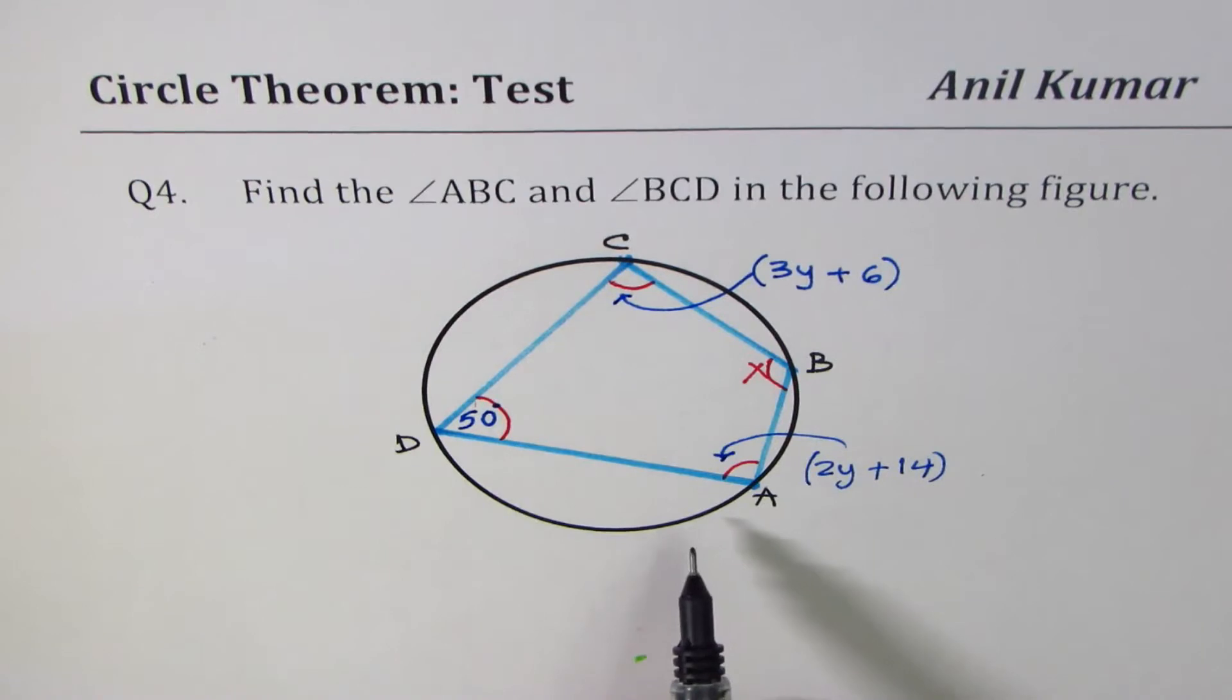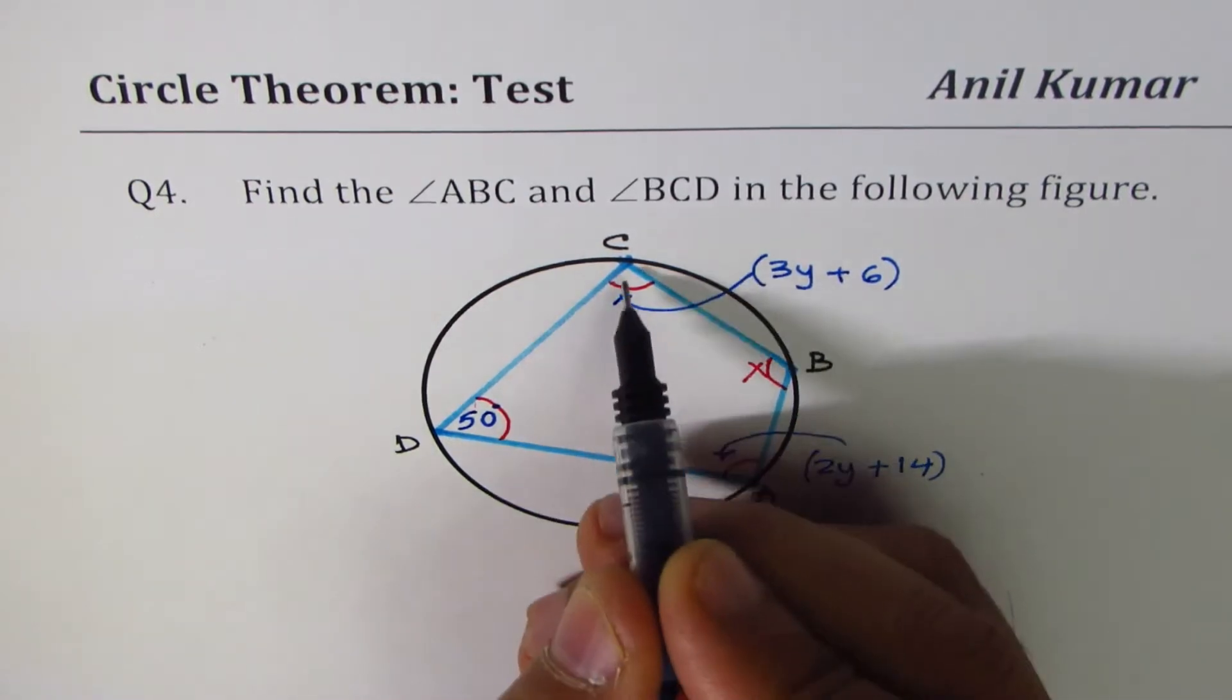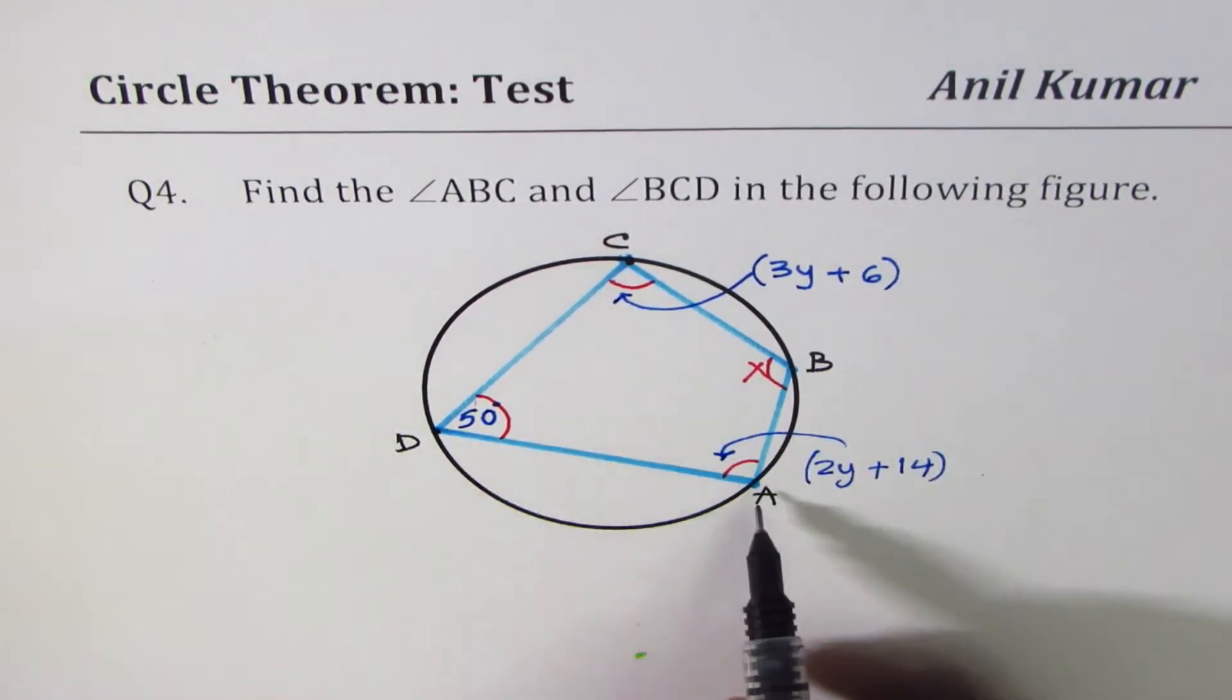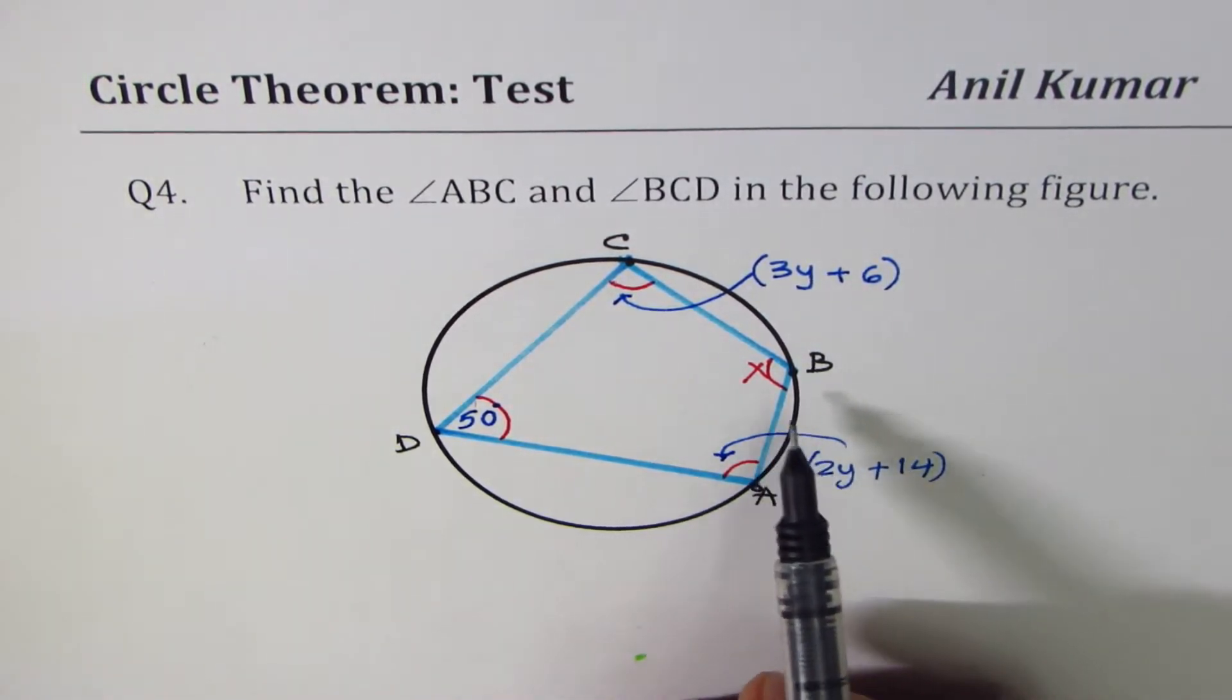So we are given a cyclic quadrilateral here. Four vertices on the circumference of a circle. We need to find the angles.